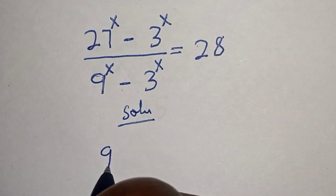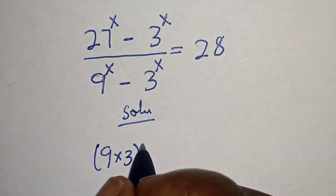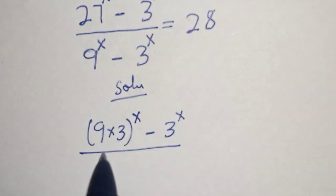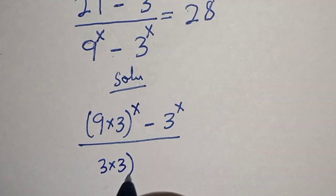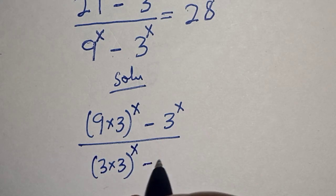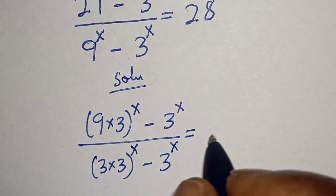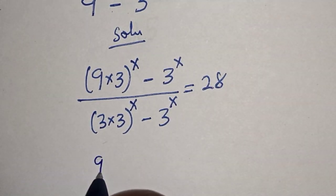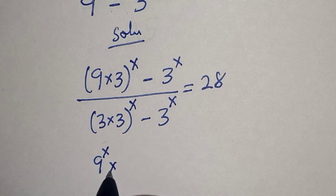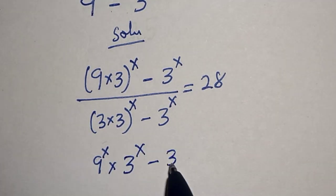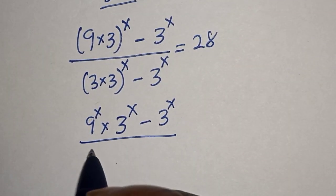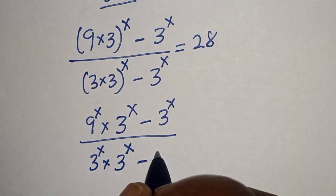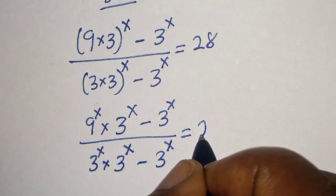Solution: 27 to the power of s can be written as 9 times 3, all raised to power s, minus 3 raised to power s, divided by 9 to the power of s, which can be written as 3 times 3, all raised to power s, minus 3 raised to power s, is equal to 28. Then we have 9 raised to power s multiplied by 3 raised to power s, minus 3 raised to power s, over 3 raised to power s multiplied by 3 raised to power s, minus 3 raised to power s, is equal to 28.